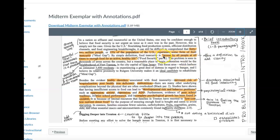This problem is seen in the thousands of areas across the country, but a reasonable place to begin restoration would be the neighborhood of East Trenton in the city capital of New Jersey. This focus area, which harbors an estimated 3,600 residents, is experiencing a great deal of distress in regard to hunger. And I believe its relative proximity to Rutgers University makes it an ideal candidate to rehabilitate. So he then tells us, here's the population I'm working with. He's obviously citing the statistic from Feeding America. And he offers some evidence as to why he wants to work there. So we'll get a little bit more into that as we go on, but paragraph one is very explanatory. It's focused and we understand the purpose. All right,